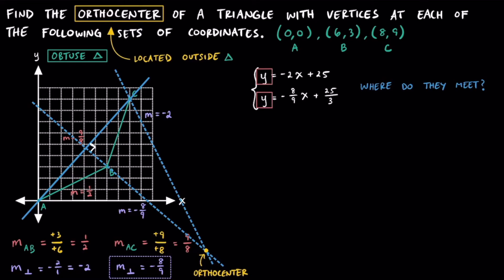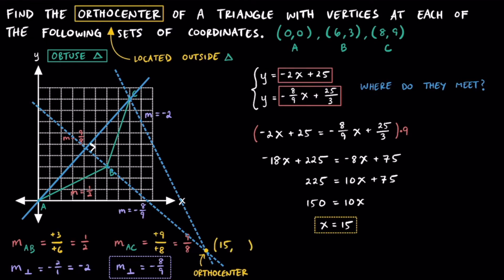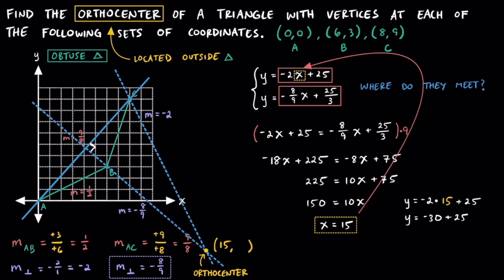Because both linear equations have Y isolated, we can use substitution: negative 2x plus 25 equals negative 8/9 x plus 25/3. Multiplying both sides by the LCD of 9 to clear fractions gives us negative 18x plus 225 equals negative 8x plus 75. Adding 18x to both sides: 225 equals 10x plus 75. Subtracting 75: 150 equals 10x. Dividing by 10: x equals 15. Plugging x equals 15 into y equals negative 2x plus 25 gives y equals negative 2 times 15 plus 25, so y equals negative 5.